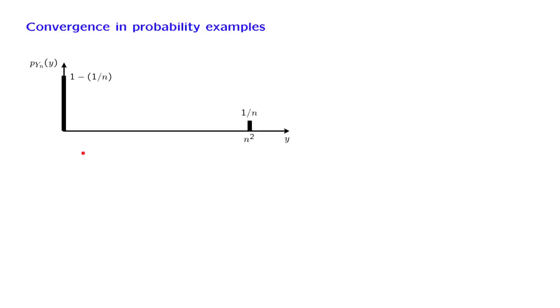We need to check the definition. So we fix some epsilon, which is a positive number, and we look at the probability of the event that our random variable is epsilon or more away than what we think is the limit of that sequence. We look at that probability, and in this example,